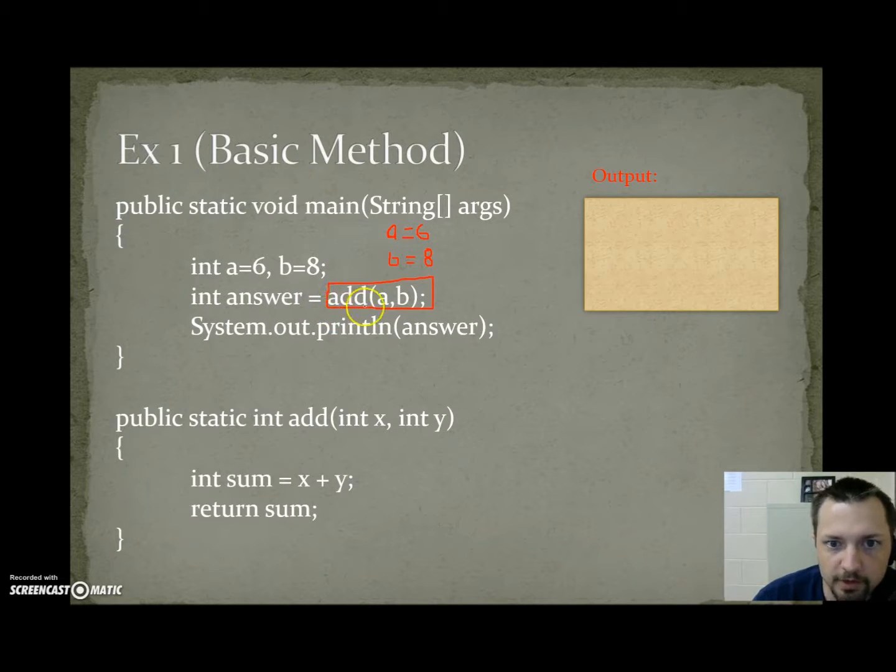Then, I say int answer equals add a b. And what's happening right here is a method call. I'm invoking the add method, and I'm sending the data a comma b. But what's actually happening is these are passed by value because they're primitives. I am passing 6, and 6 gets passed and stored into a brand new variable x. 6 comma 8, and the 8 gets stored into the second parameter y. So down here, I'm going to say x equals 6, y equals 8. And then, sum is equal to 6 plus 8, which would be 14.